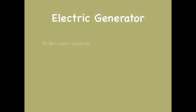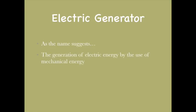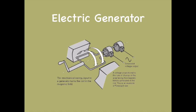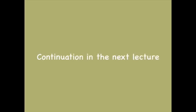Now let's proceed to the concept of electric generator. As the name suggests, it is the generation of electric energy by the use of mechanical energy. Here the mechanical energy is used in the form of rotating the shaft to generate a sinusoidal current with the help of two or more commutators or brushes. The diagram given below shows an electric generator which uses mechanical energy to rotate the shaft to produce a sinusoidal current — please read the text and pause your video. The continuation of this lesson can be found in the next lecture. Thank you for watching.